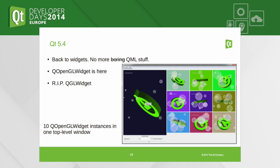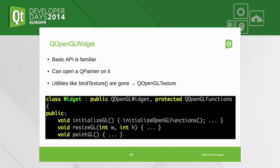Now in Qt 5.4, the entire Qt OpenGL module is obsolete. It will remain usable, but if you are starting new development, it's probably not the best idea to rely on it. Instead, just think of the word 'Open' — now instead of QGL, you are writing QOpenGL. We keep the familiar pattern of initializeGL, resizeGL, paintGL. Just derive from QOpenGLWidget, re-implement some functions, and that's that.